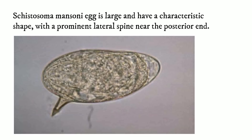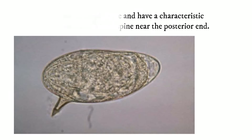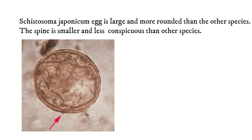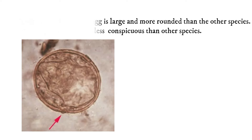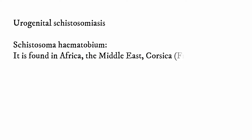Schistosomiasis eggs are large and have a characteristic shape with a prominent lateral spine near the posterior end. Schistosoma japonicum eggs are large and more rounded than the other species, and the spine is smaller and less conspicuous. For urogenital schistosomiasis, it is caused by Schistosoma haematobium, found in Africa, the Middle East, and Corsica, which is in France. The Schistosoma haematobium egg is large and bears a conspicuous terminal spine.